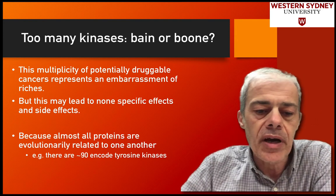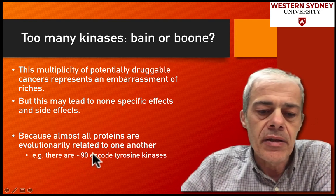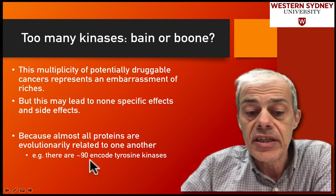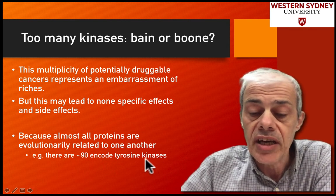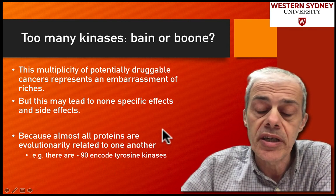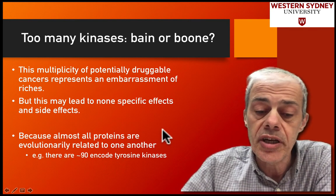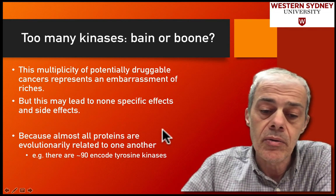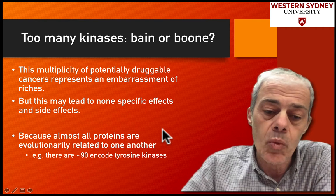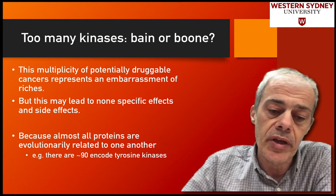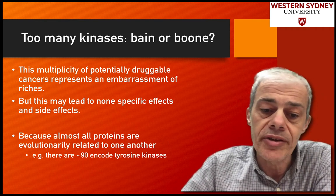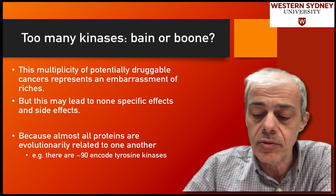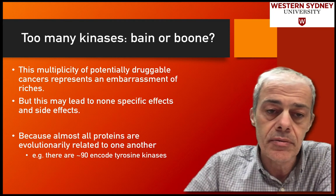For argument's sake, there are at least 90 encoded tyrosine kinase proteins in the human genome. So how do we target one or the other? Is it a boon or is it a bane to researchers?